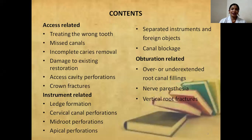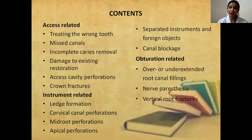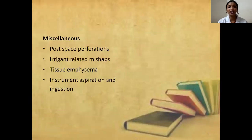Mishaps can be access-related: treating the wrong tooth, missed canals, incomplete caries removal, damage to existing restorations, access cavity perforations, and crown fractures. Instrument-related mishaps include ledge formation, cervical canal perforations, mid-root perforations, apical perforations, separated instruments, foreign objects, and canal blockade. Obturation-related mishaps include over- or under-extended root canal fillings, nerve paresthesia, and vertical root fracture. Miscellaneous mishaps include furcation perforations, irrigant-related mishaps, tissue emphysema, and instrument aspiration and ingestion.